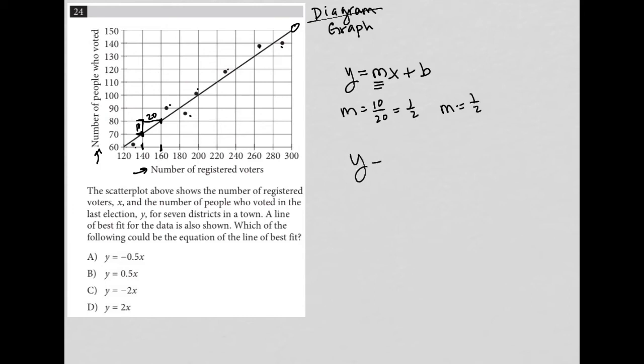So my slope is equal to one half. I have y equals, and I peeked down at the answer choices. I'm going to call it 0.5 instead of one half because I have decimals in my answer choices. So y equals 0.5x. And then my b value, which is where it crosses the y-intercept, it's here.